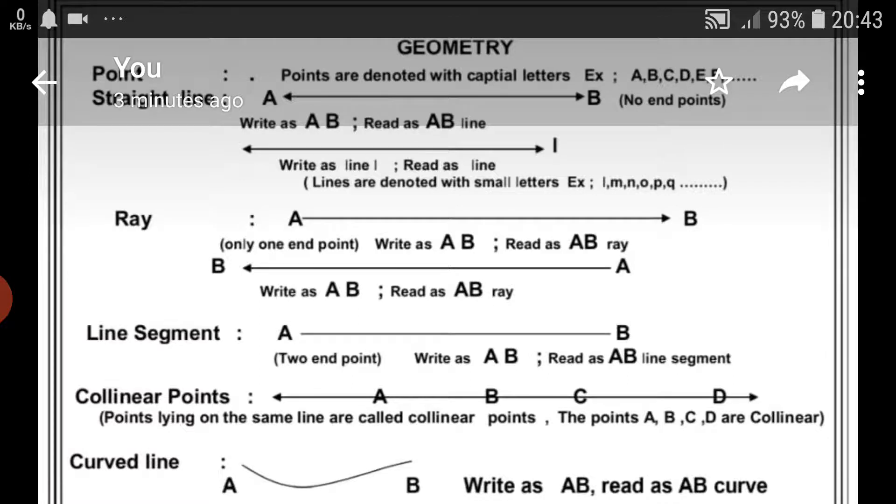When write as a line, A B. Lines are denoted with small letters like example L, M, N, O, P, Q.